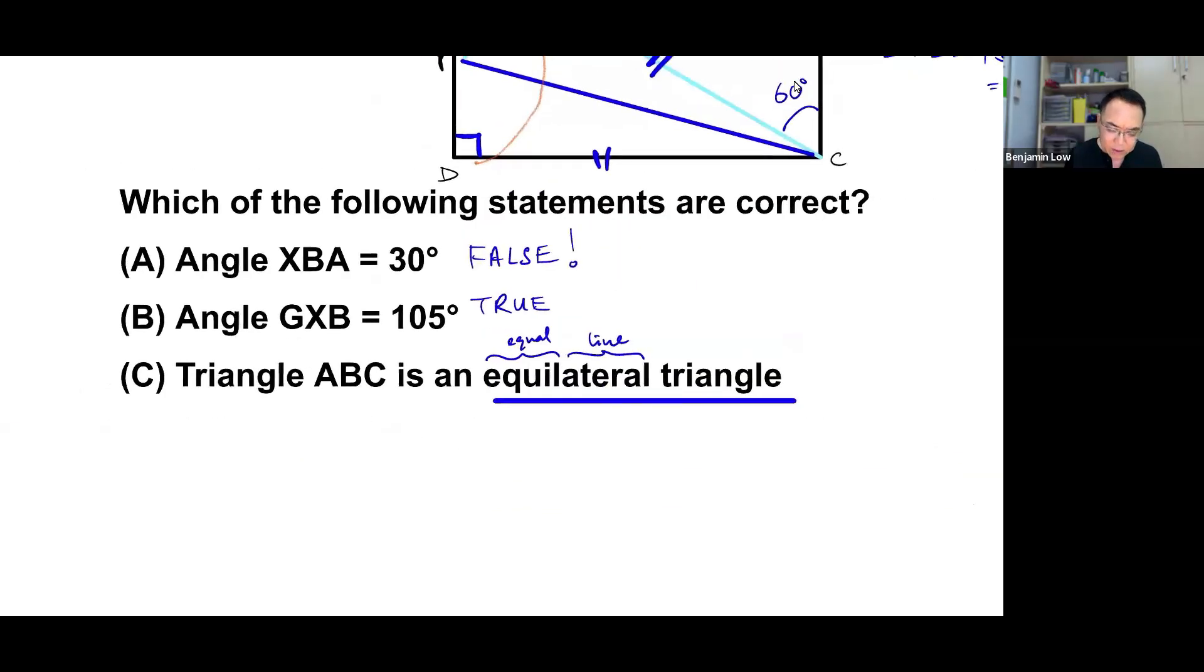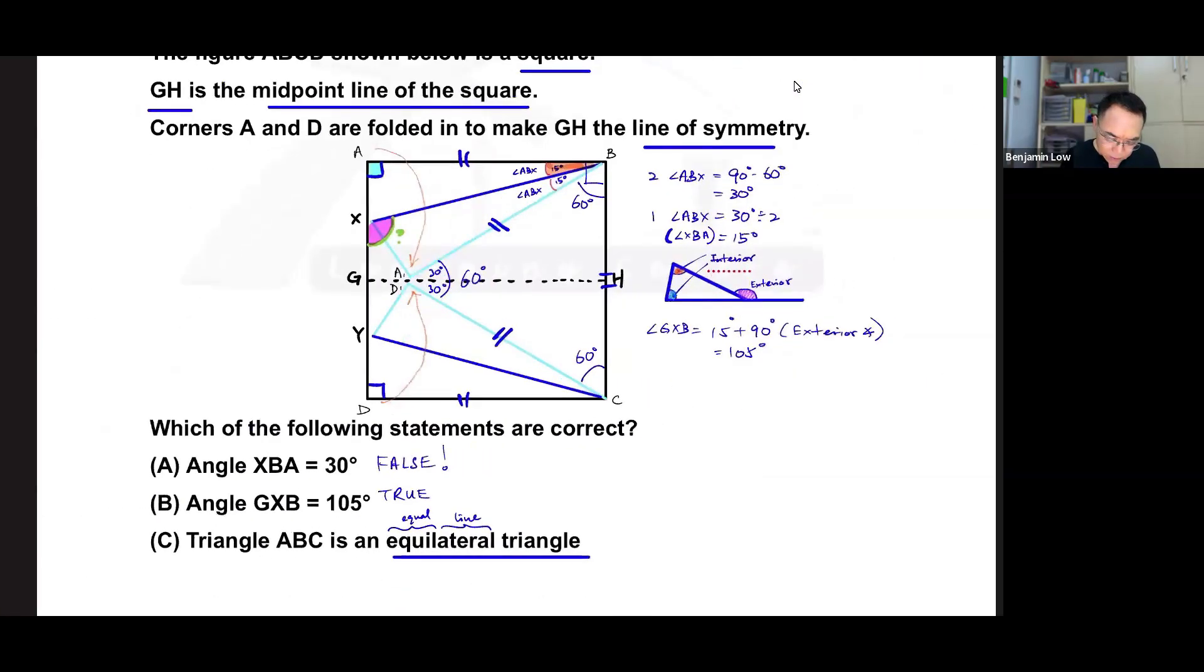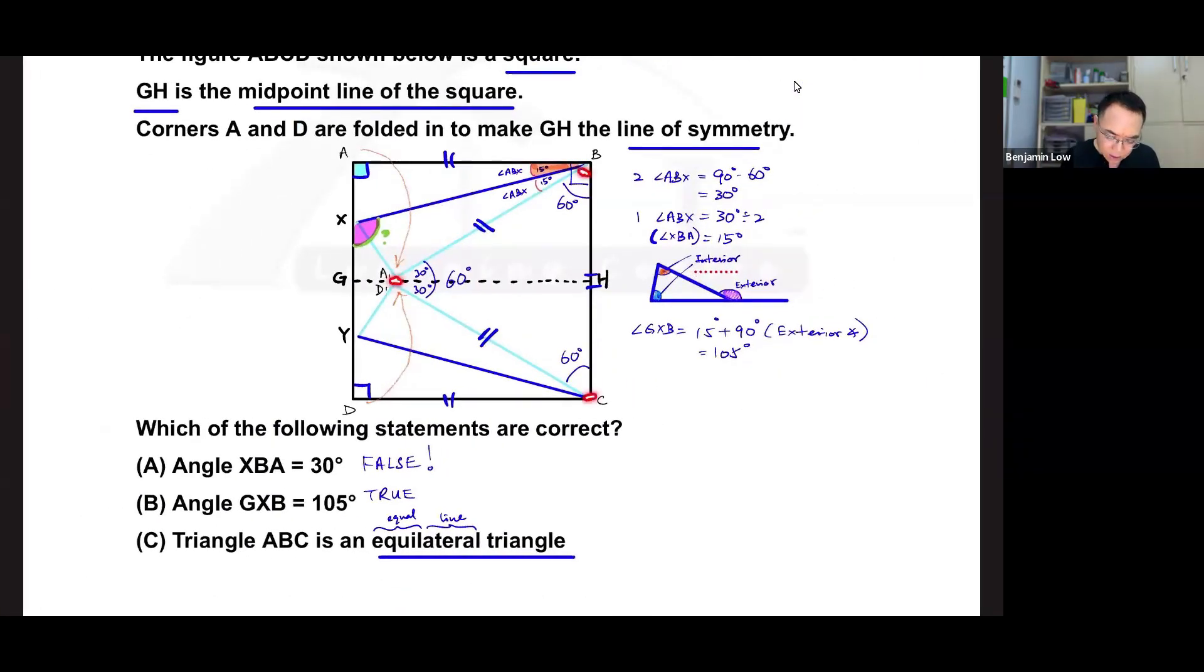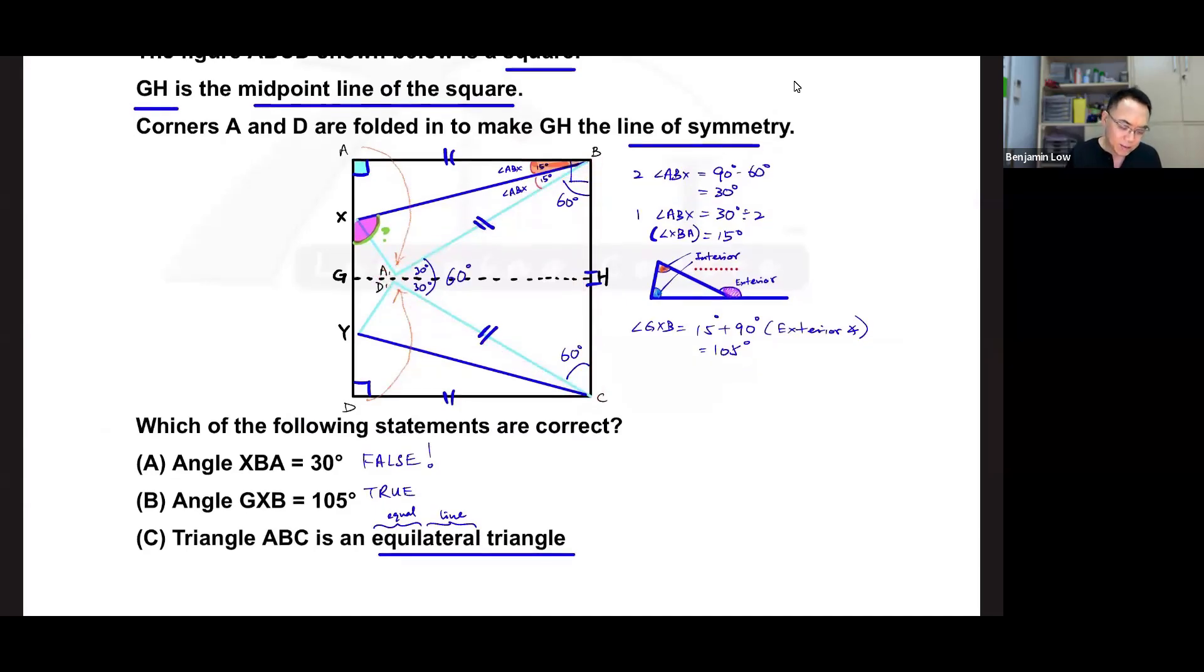And triangle ABC is here. A, B, C. Is it equilateral? The answer is yes. We have talked about that. The answer is true. Okay, so for your choice, you would have taken B and C to be true and A to be false. Alright.